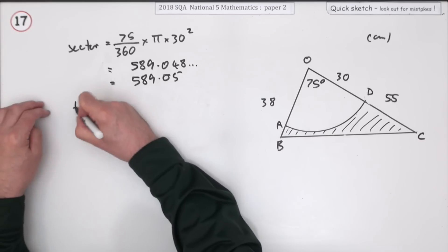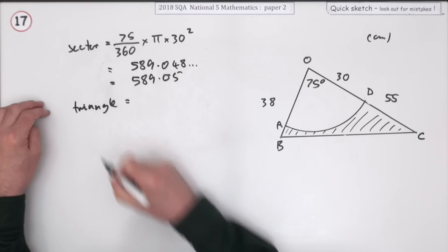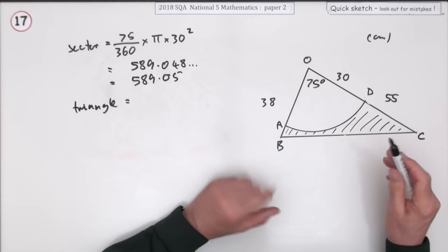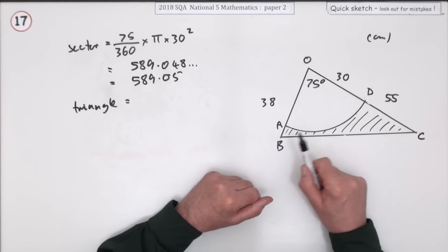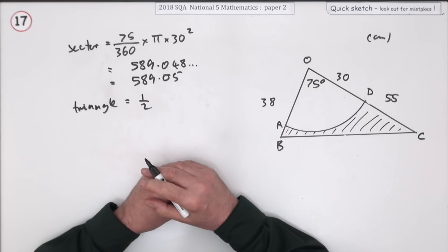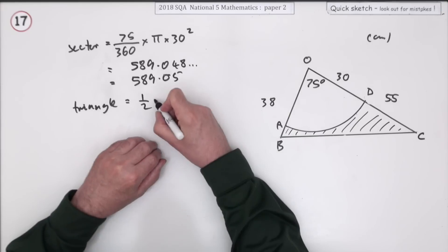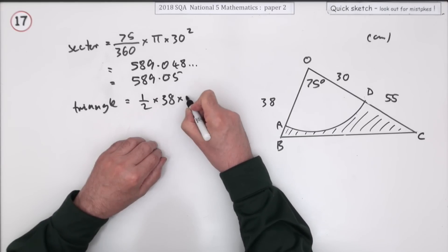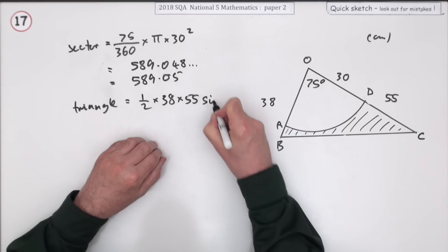Now the triangle. It's not a right angle triangle and you don't know the height, so it's going to be the formula: one-half AB sine C. I'll go in with one-half of 38 times 55 times the sine of the angle in between.